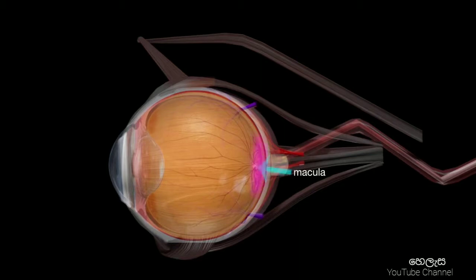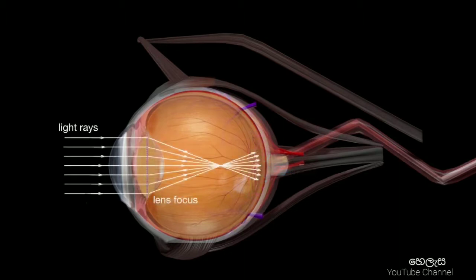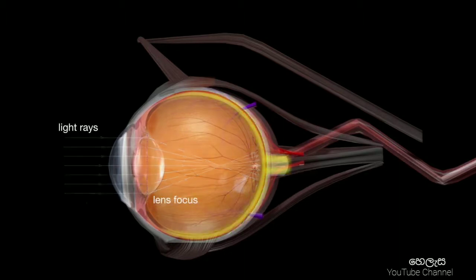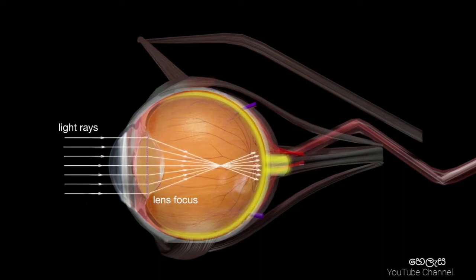When light falls into your eye, your lens focuses the rays onto the retina. Floaters happen here in the vitreous body, just behind the lens. There are three basic types of floaters, so let's cover them one by one.